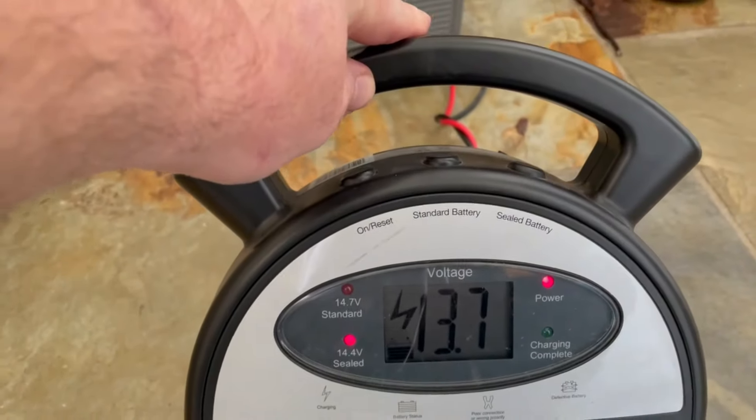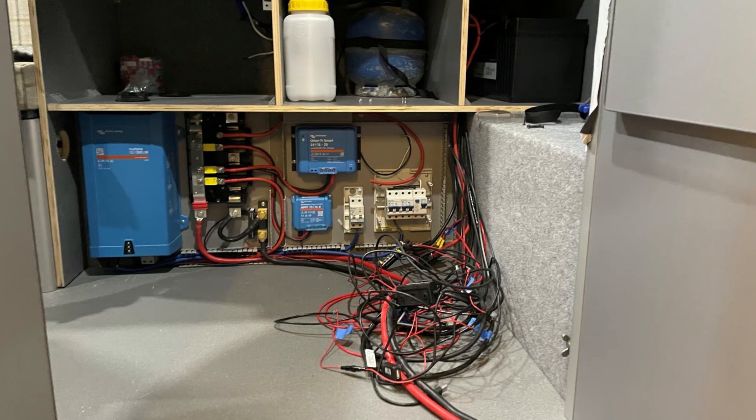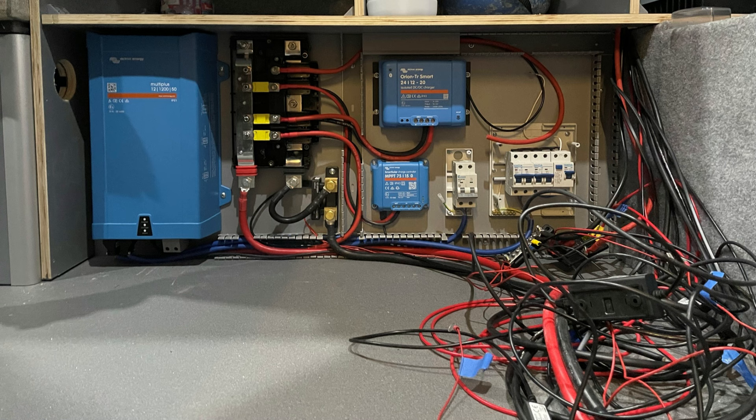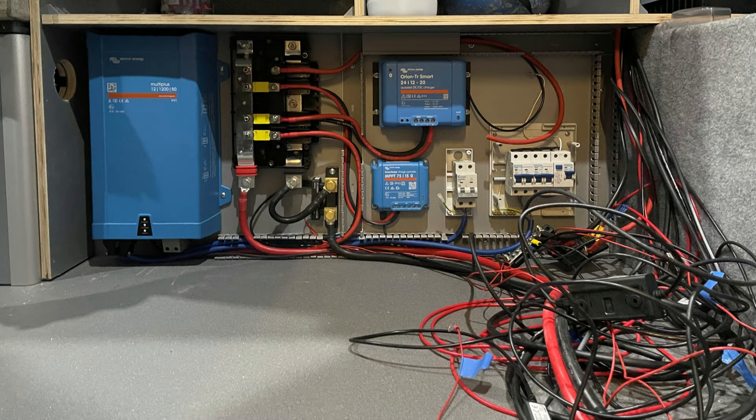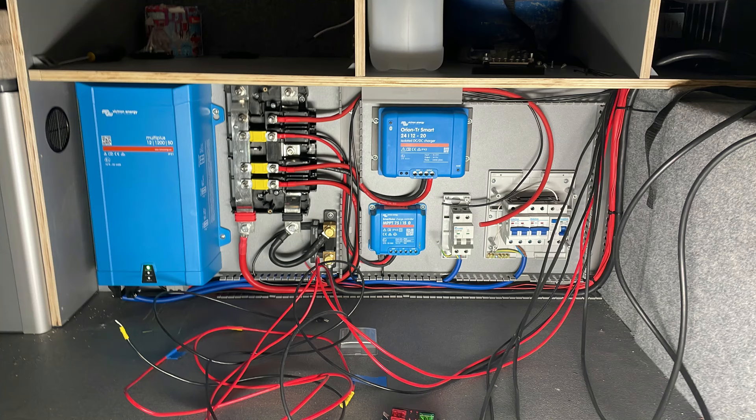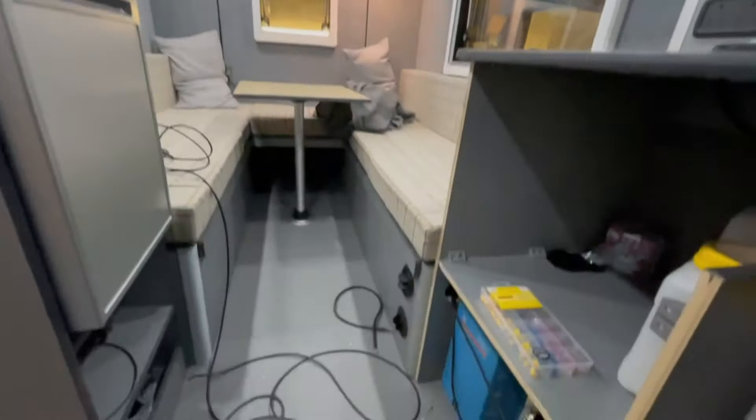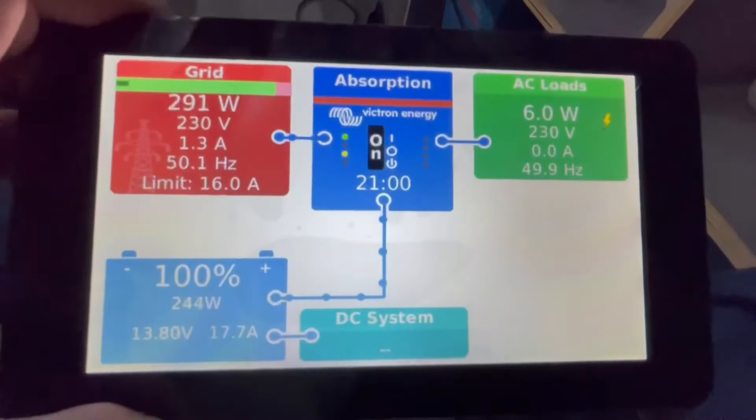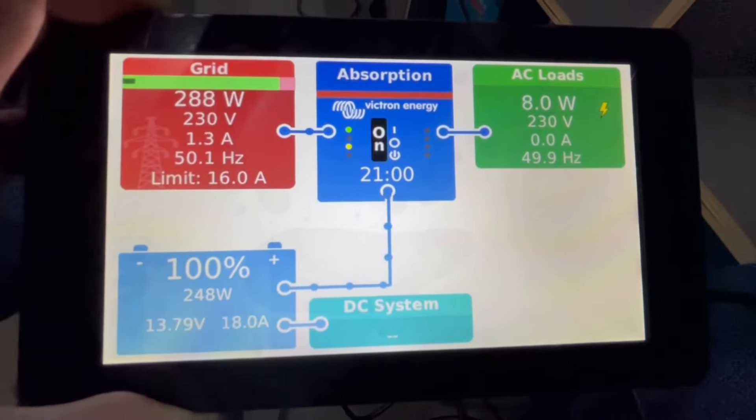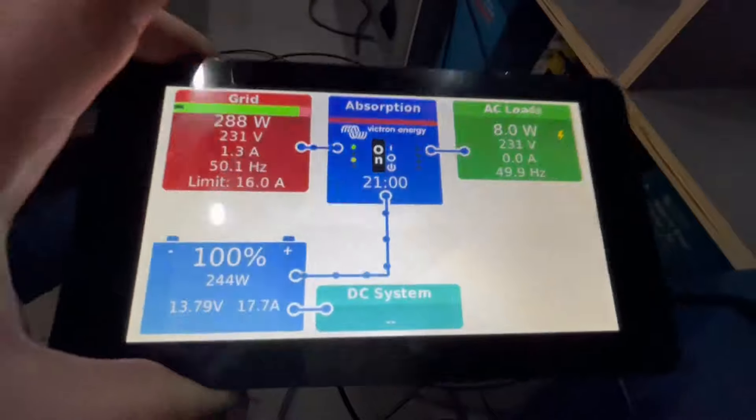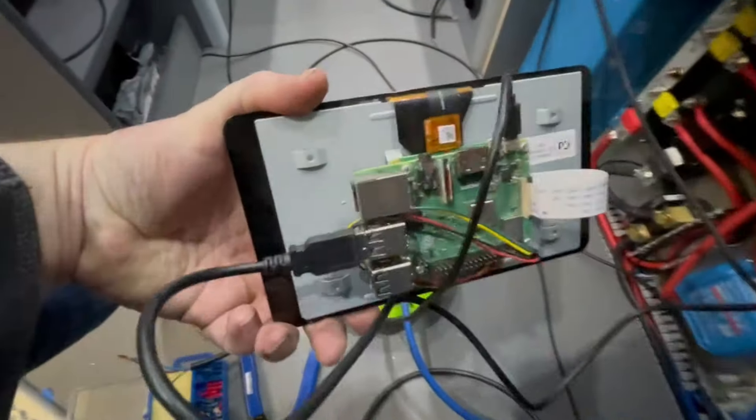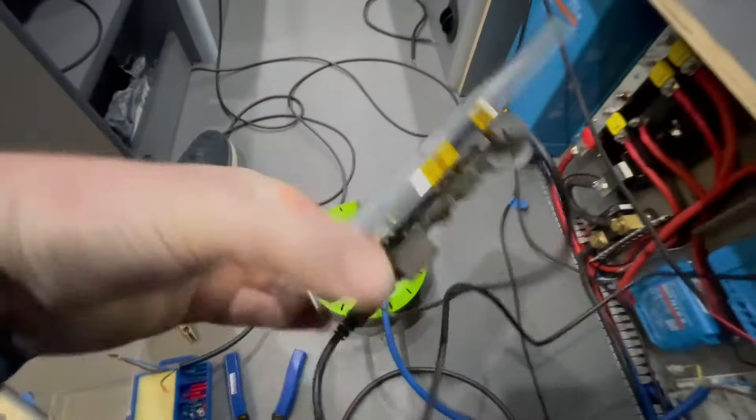Just doing a quick test of all the Victron kit before I wire it in the Volvo. This is the Raspberry Pi with some bolt-ons, just a straight Raspberry Pi connecting to the VE bus.